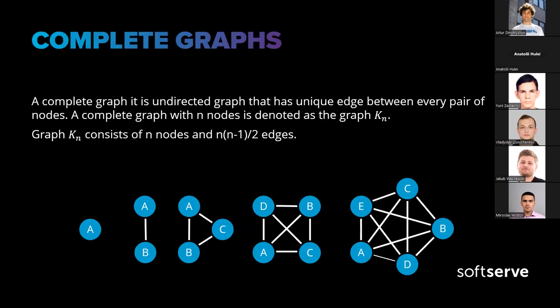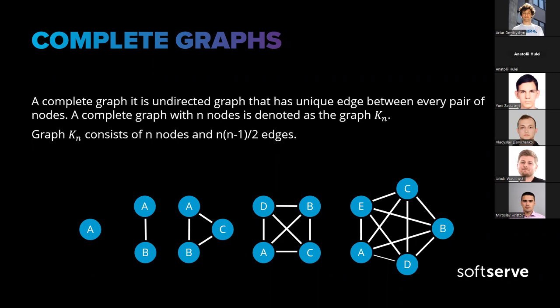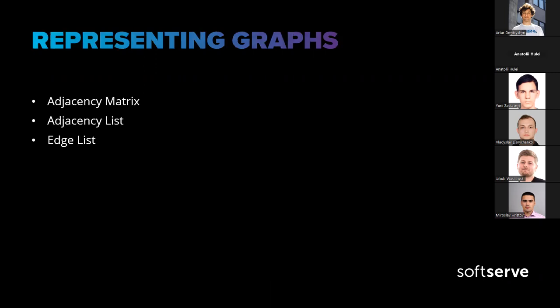Another type is a complete graph. A complete graph is an undirected graph that has a unique edge between every pair of nodes. A complete graph with N nodes is denoted as K_N. For K_N, it consists of N nodes and N × (N−1) / 2 edges. That covers the basic types of graphs — they can be combined with each other, and there are other types that are mostly combinations of these common types.